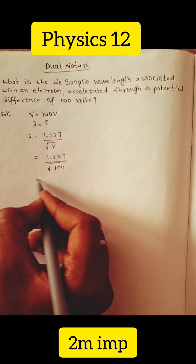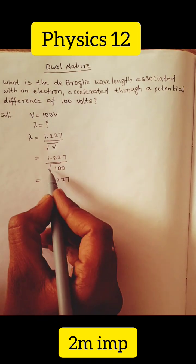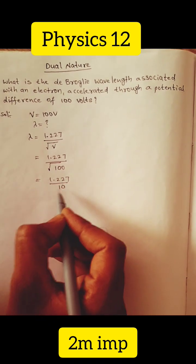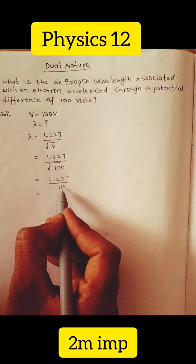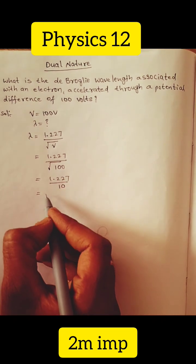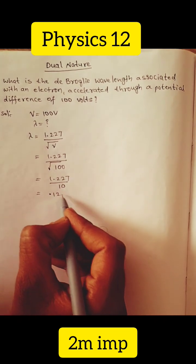Under root 100. 1.227 by root 100 is 10. So when division is by 10, the decimal point shifts to the left side. So 0.1227.